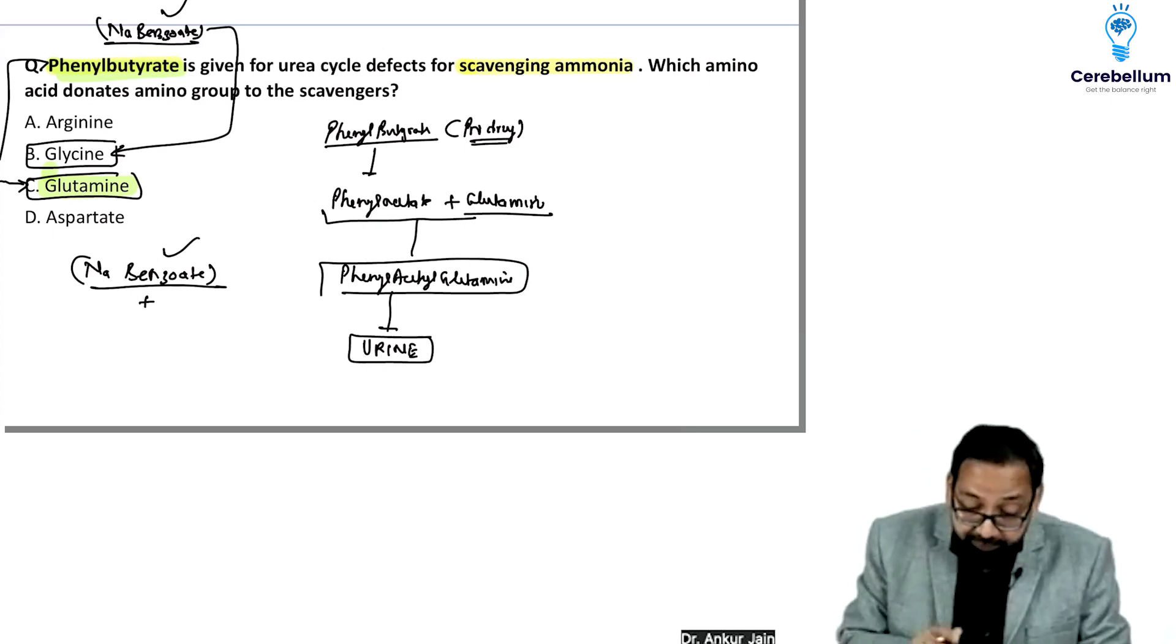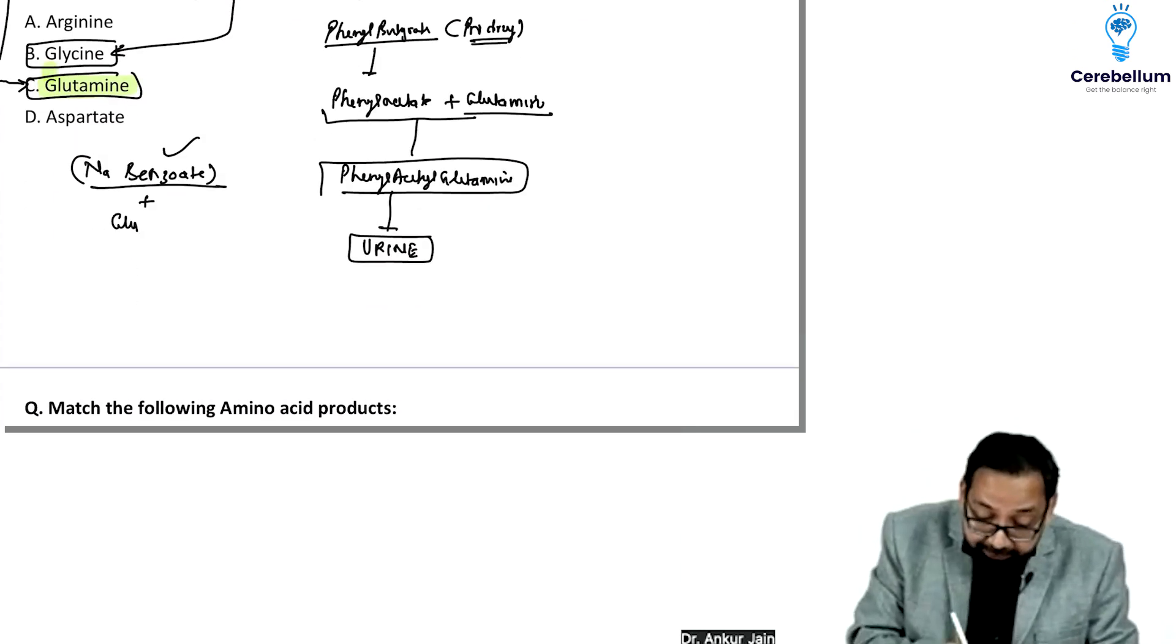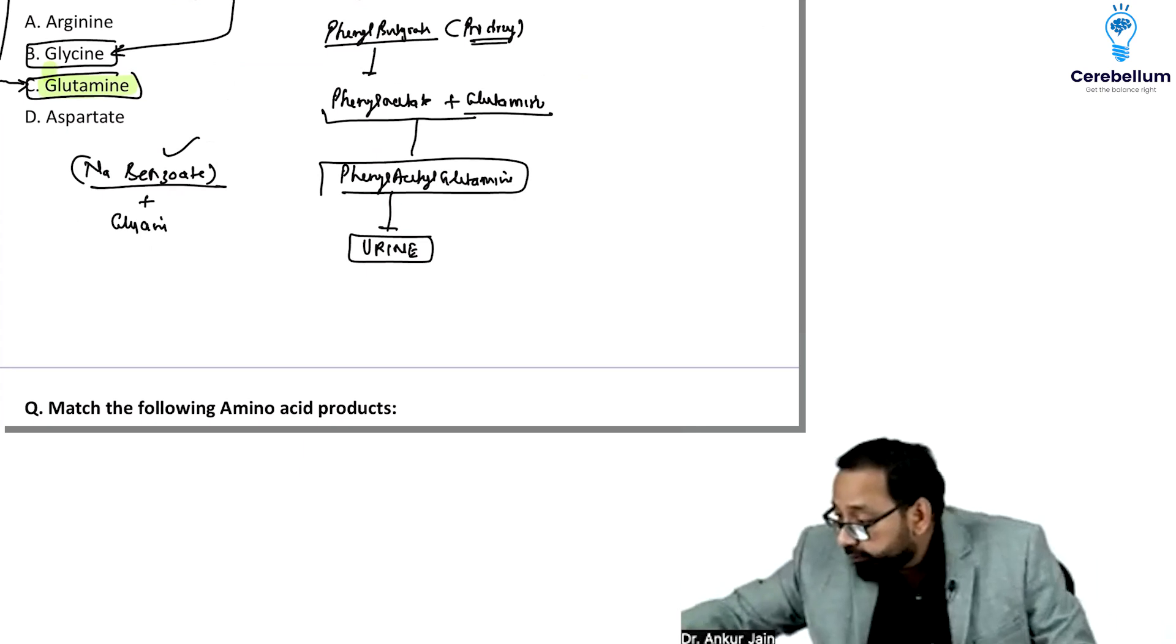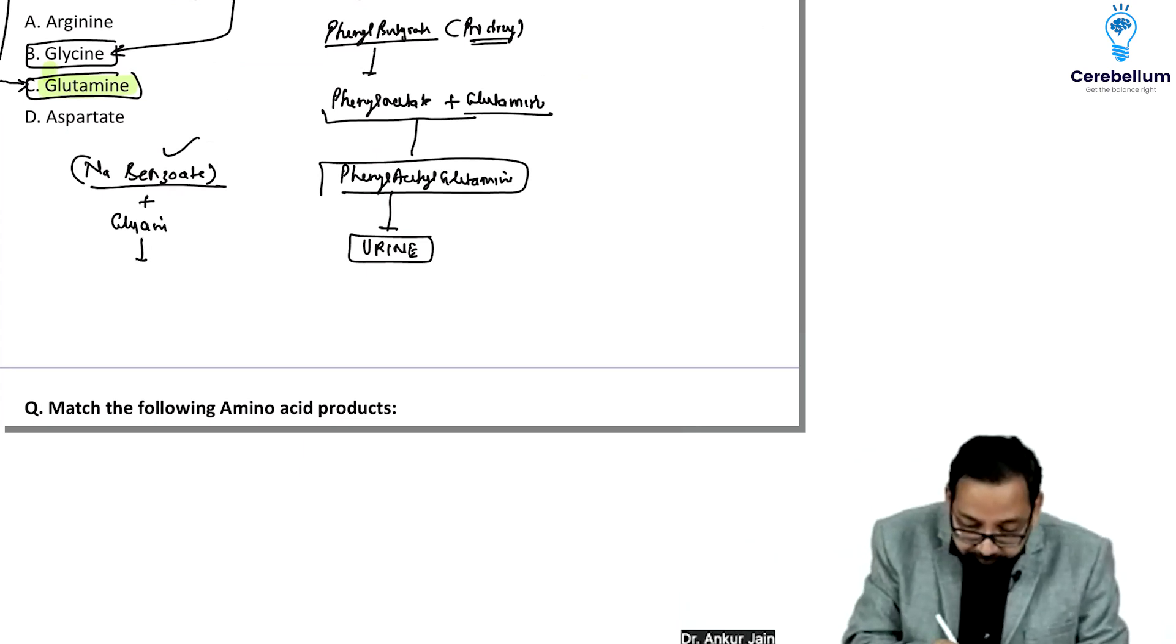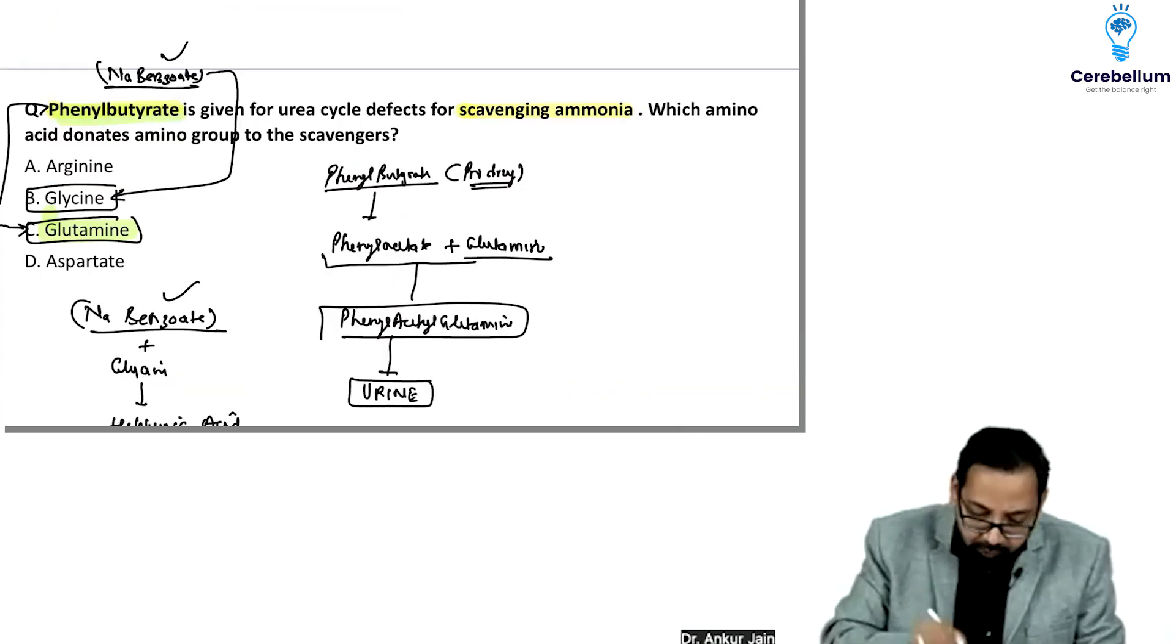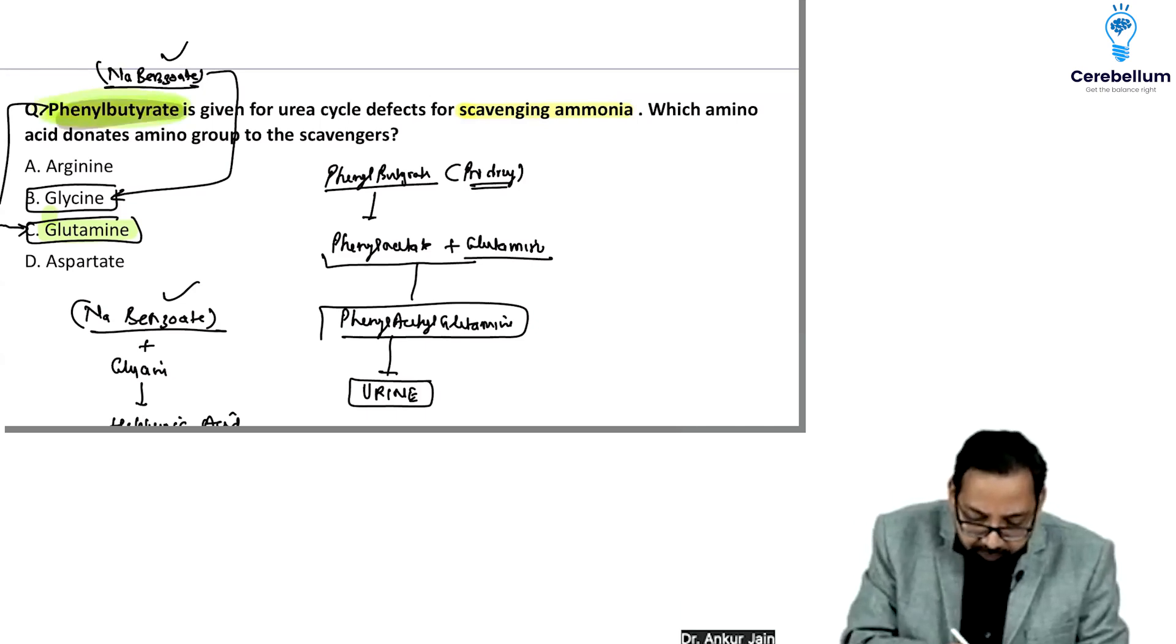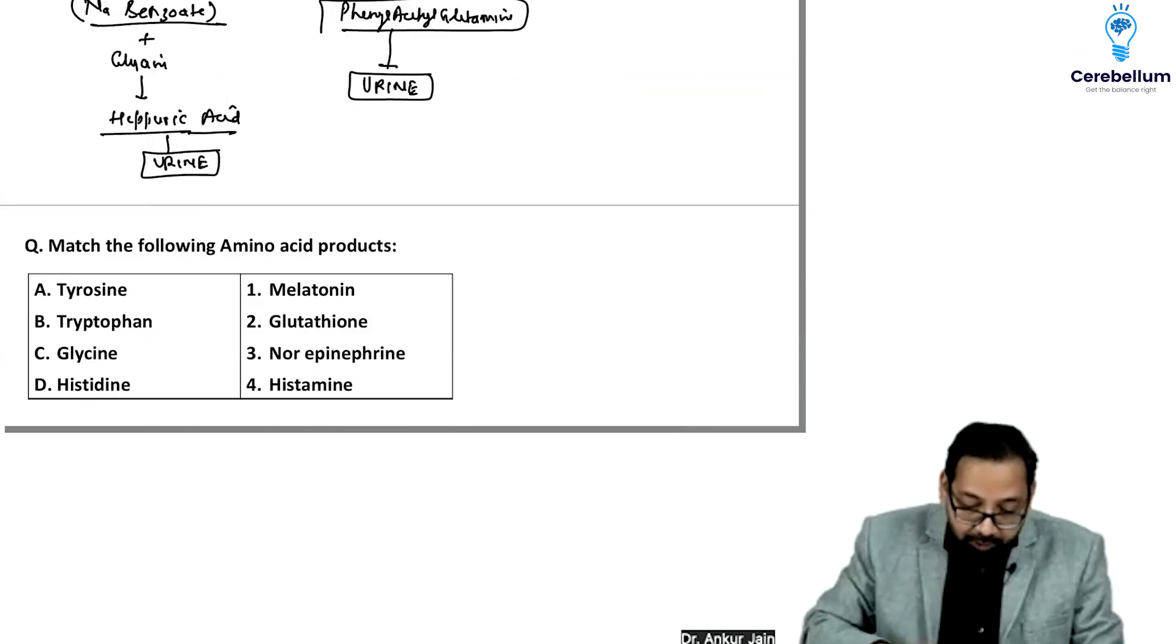If sodium benzoate or benzoate is given, it binds with glycine to form hippuric acid or hippurate, which is excreted in urine. Both are previously asked questions. In this case, I've taken phenylbutyrate, so the answer is glutamine.